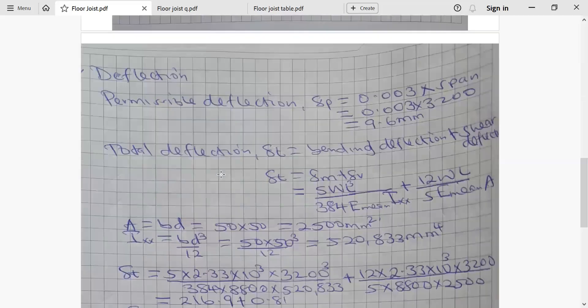Let's look at the deflection check. We say permissible deflection is given by 0.003 multiplied by the effective span, which is 0.003 times 3200 millimeter, which gives us 9.6 millimeter. Total deflection is normally given as the sum of bending and shear deflection. Bending deflection, given our loading condition, we use the formula 5WL cubed over 384 E min Ixx, plus 12WL divided by 5 E min times area of the section.